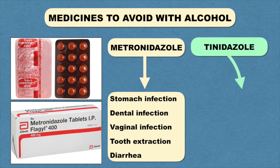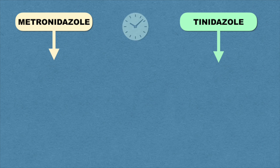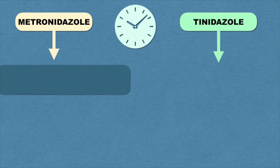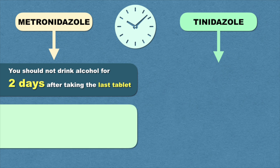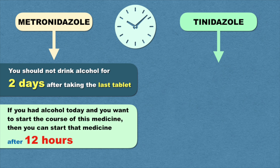The next medicine, tinidazole, also belongs to the same group and is prescribed for the same reasons. If you are taking metronidazole, you should not drink alcohol for 2 days after taking the last tablet. And if you have had alcohol and want to start this medicine, you can start after 12 hours — there should be a minimum gap of 12 hours for the toxic compounds of alcohol to flush out. If you have taken tinidazole, you should not drink alcohol for 72 hours, that is 3 days.